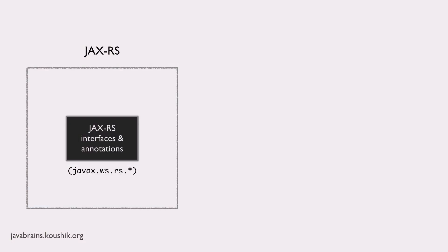The way it works is something like this. The JAX-RS API that we will learn and use in this course is a bunch of interfaces and annotations. We will use a lot of these annotations in the subsequent tutorials, and this is what we'll learn in this course. This is the core of learning how to write REST APIs with JAX-RS, because this is JAX-RS. In this course, we'll be writing code which uses a lot of classes from here.